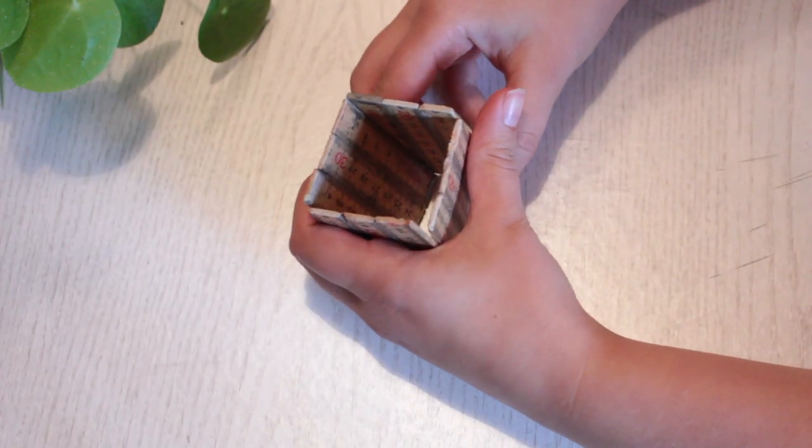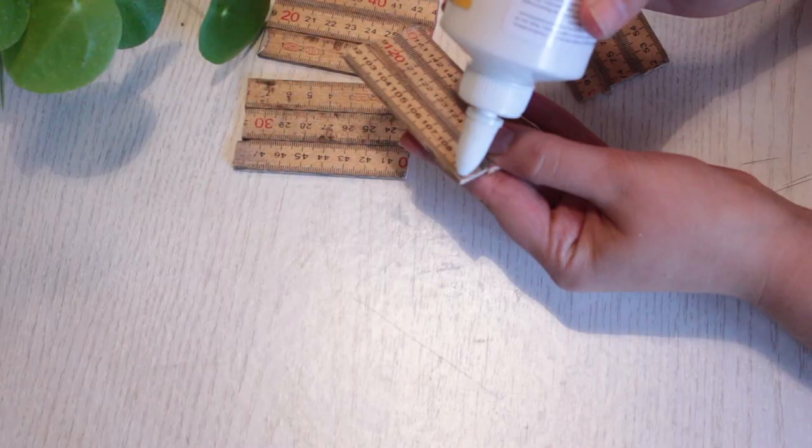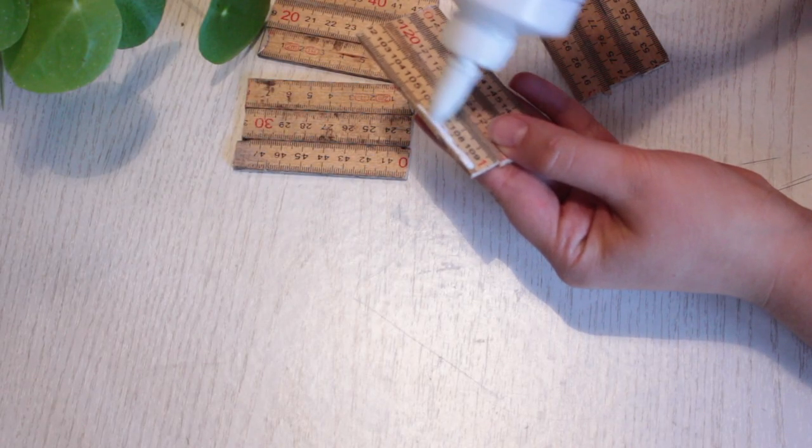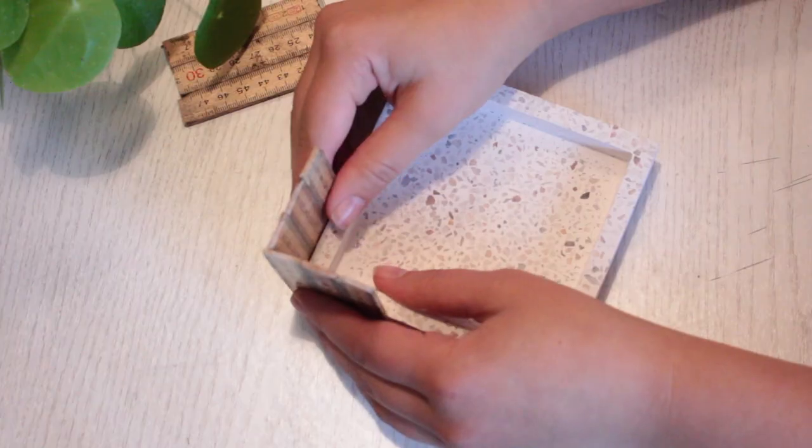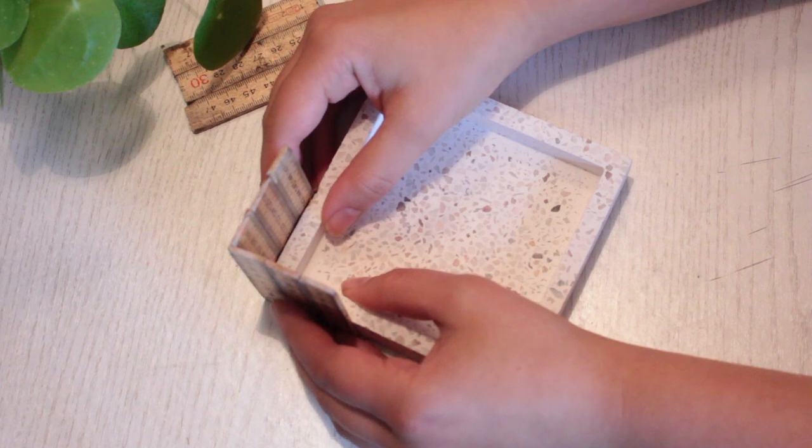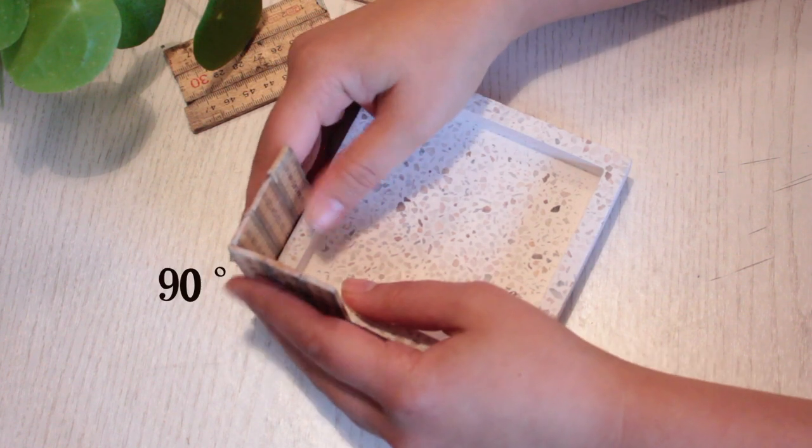When they're all completely dry, we need to glue the sides together. So put some glue right on the edge of one side and put another one right onto it. You can use something like a plate to keep everything straight at 90 degrees.